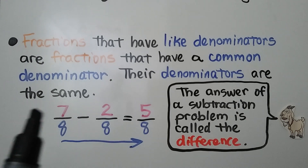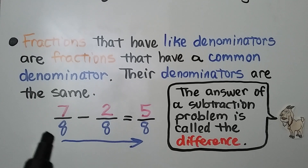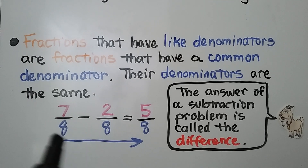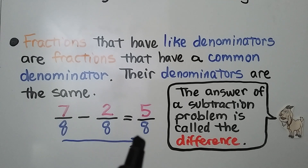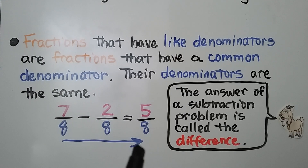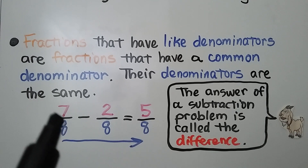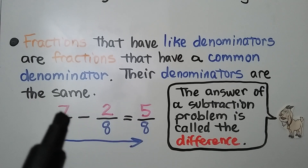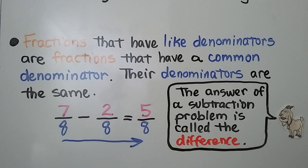We have 7 eighths minus 2 eighths. They have the same denominator, so our difference is going to have 8 for a denominator. The answer of a subtraction problem is called the difference. We just subtract using the numerator: 7 minus 2 is 5. We have 5 eighths.